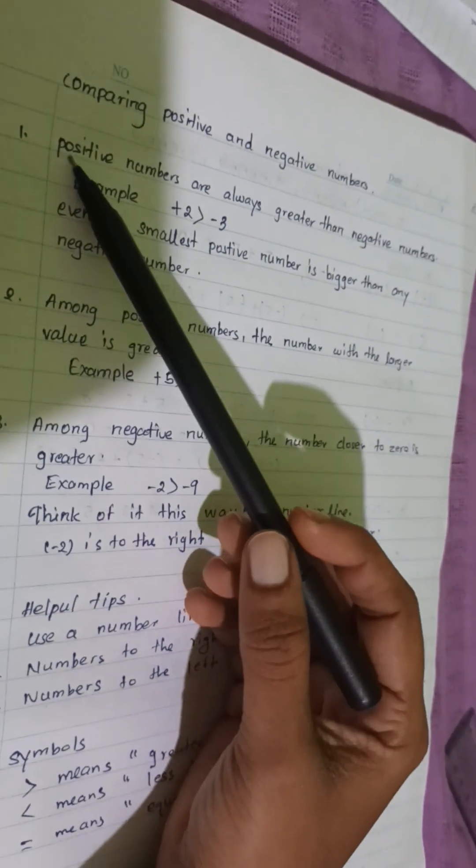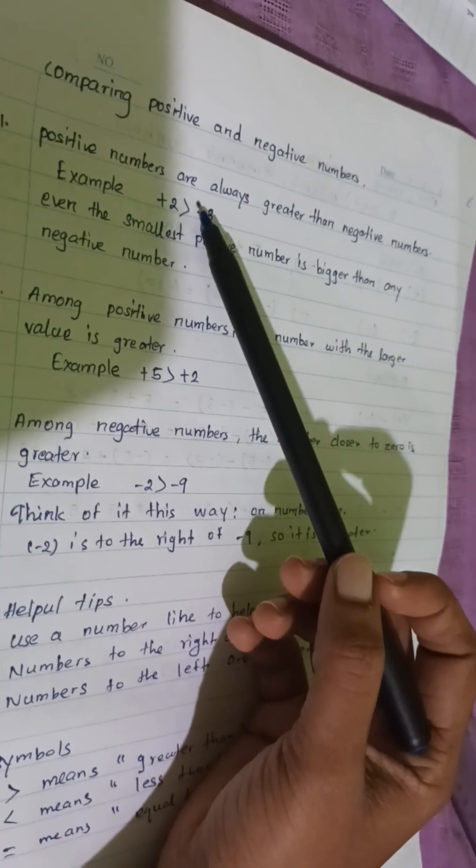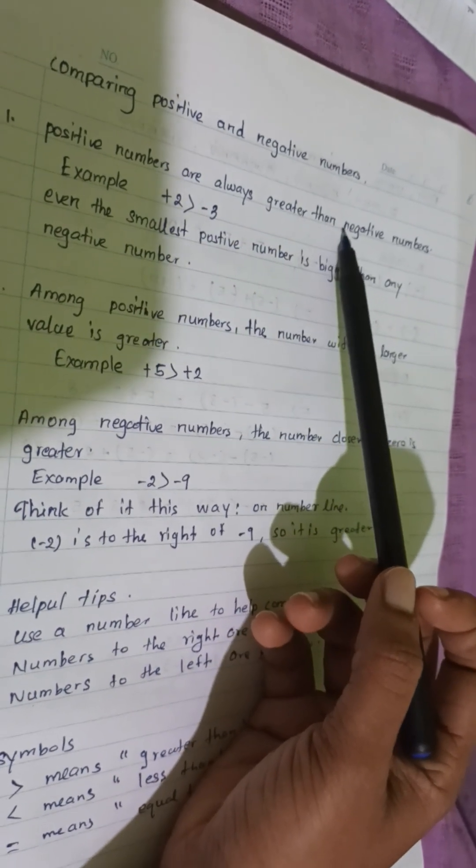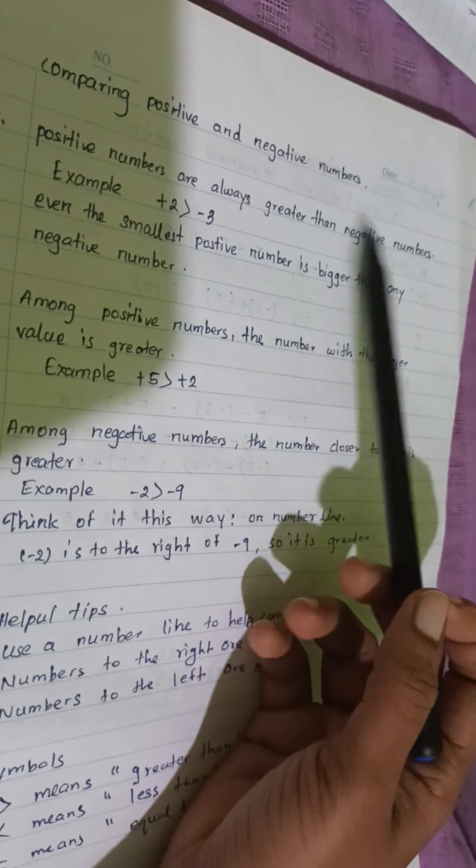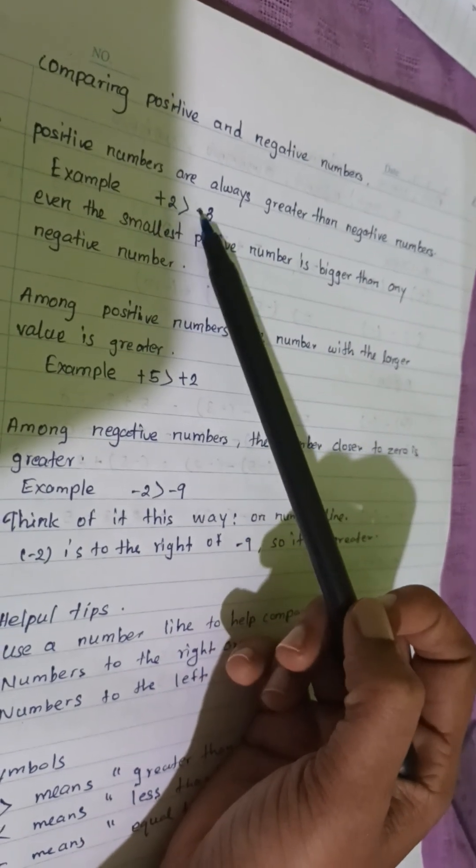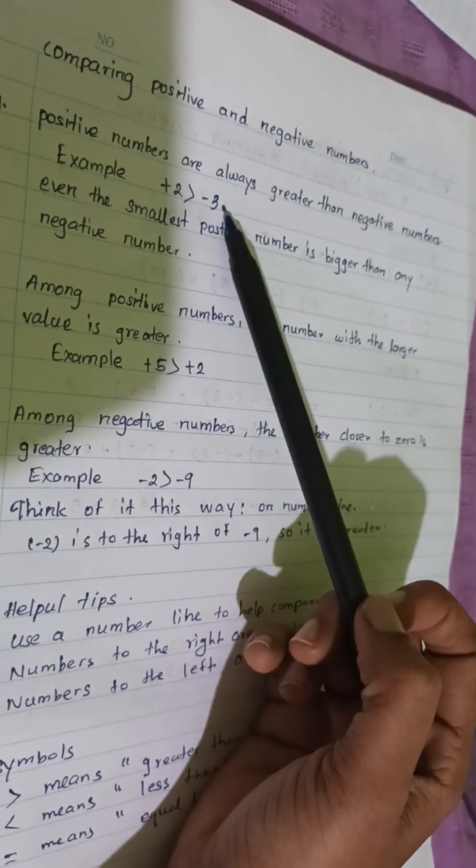First one is, positive numbers are always greater than negative numbers. Example, 2 is greater than negative 3.